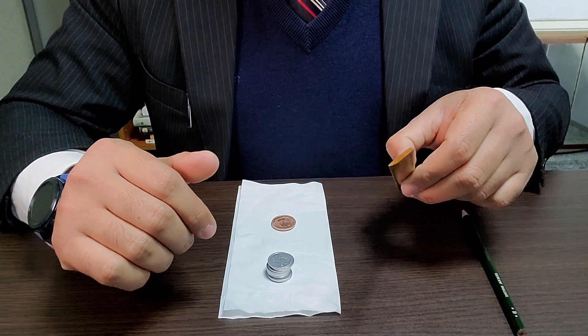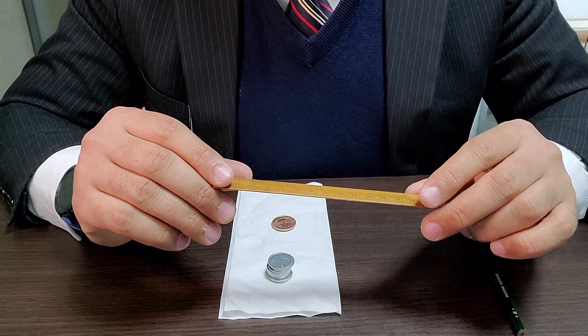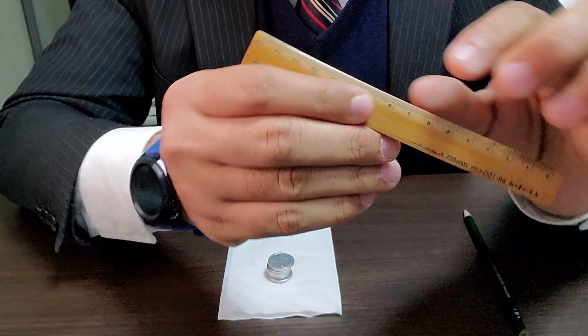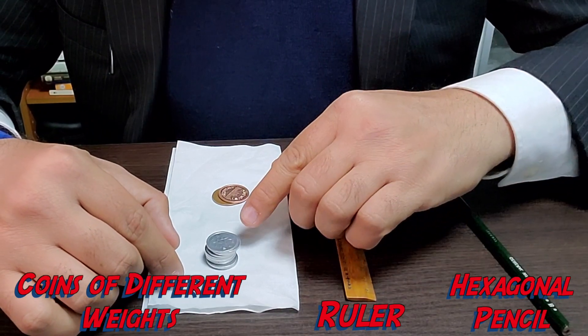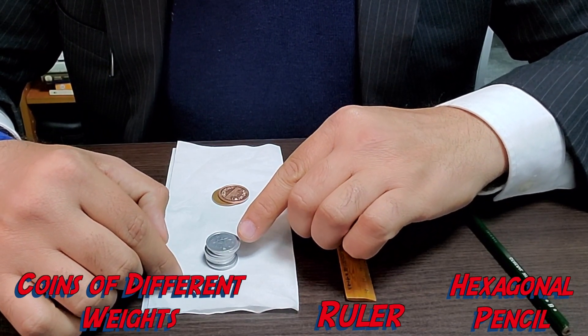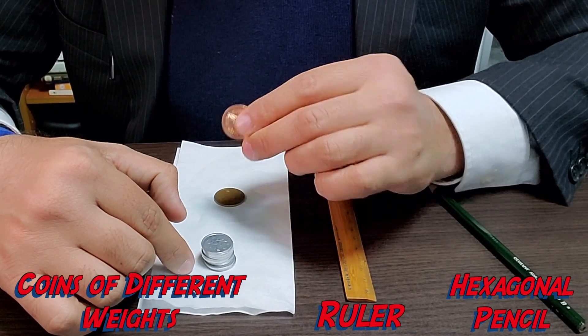Now let's move on to the next thing we need. We need a ruler. It doesn't matter if the ruler has inches on it or centimeters on it. As long as it has markings, it's okay. And finally, we need some coins. So we have a stack of 1 yen coins here and 10 yen coin here.